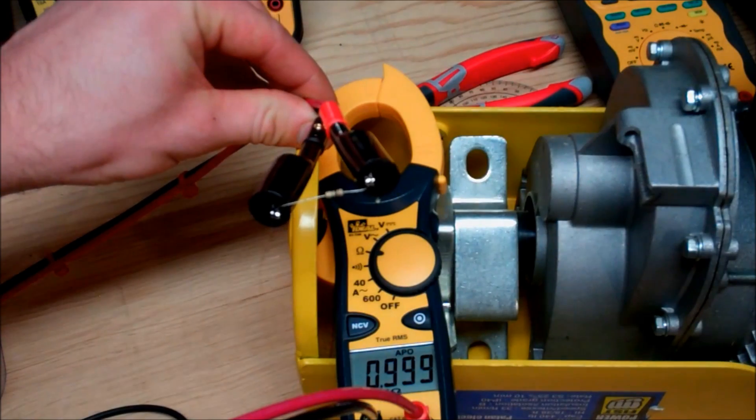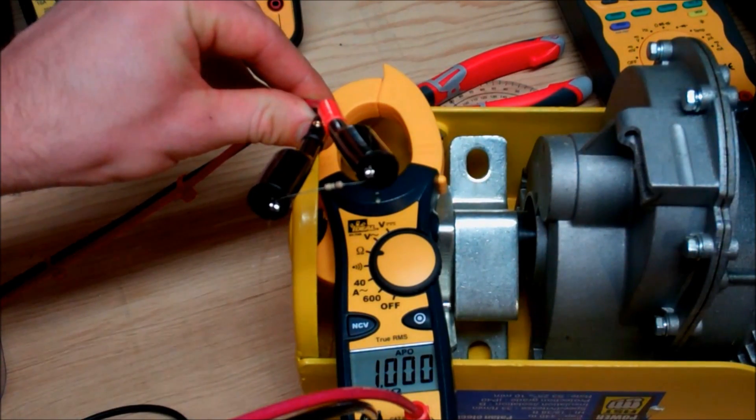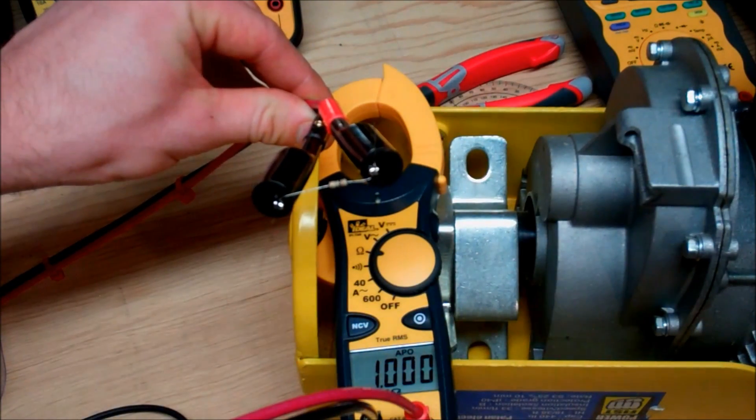Now going right to the exact opposite end of the spectrum, I have a 1 megaohm resistor in line with this. And as you can see, it's reading directly proportional to what that resistor is.